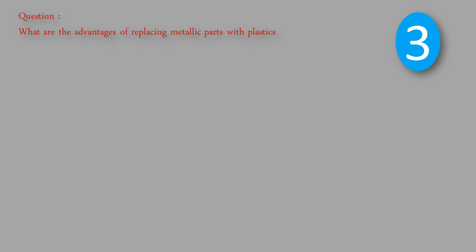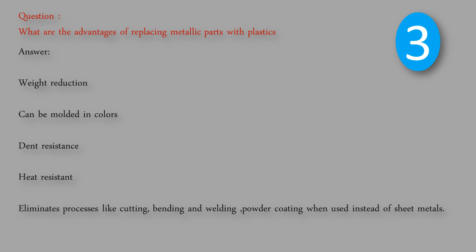Question: What are the advantages of replacing metallic parts with plastics? Answer: Weight reduction, can be molded in colors, dent resistance, heat resistant, and eliminates processes like cutting, bending and welding, powder coating when used instead of sheet metals.